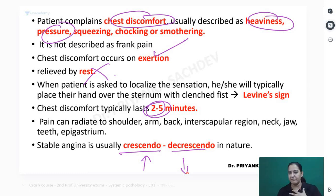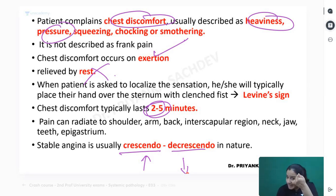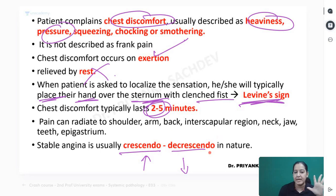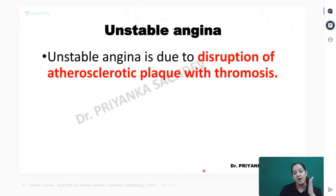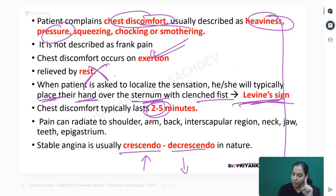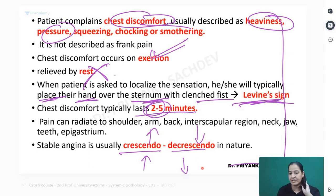If you ask the patient to describe the pain, the patient will put a fist on the chest and say it feels like someone is squeezing inside my chest. This is known as the Levine sign - the patient places the fist over the sternum and clenches the fist to demonstrate the feeling. For a two-mark exam question on stable angina, write: pain occurs on exertion, disappears on rest; due to atherosclerosis; patient has chest discomfort; Levine sign; pain lasts 2 to 5 minutes; crescendo-decrescendo pattern.